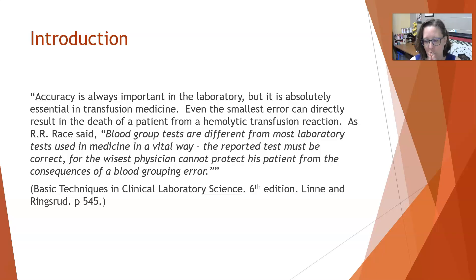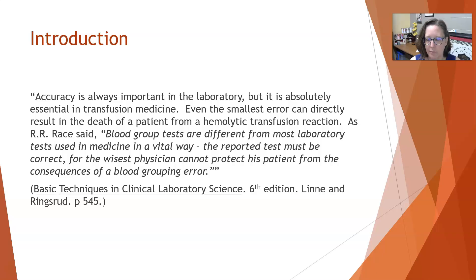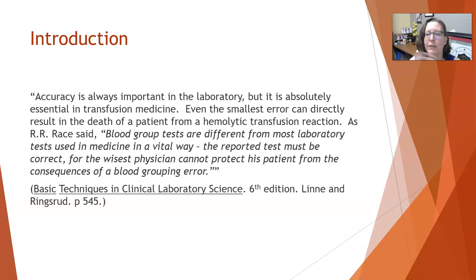This starts with proper identification of the patient at the time of sample collection and proper labeling of the samples collected to type the patient and match them to the units that might be given. It also involves picking up the right unit, labeling those units properly, and when the nursing staff comes to get those units, making sure they're picking up the right patient's blood. And when they get to the floor, they're actually giving it to the right patient. Things can go wrong in so many ways, but if at the beginning the wrong patient is sampled and mislabeled, it can have really disastrous consequences down the line.